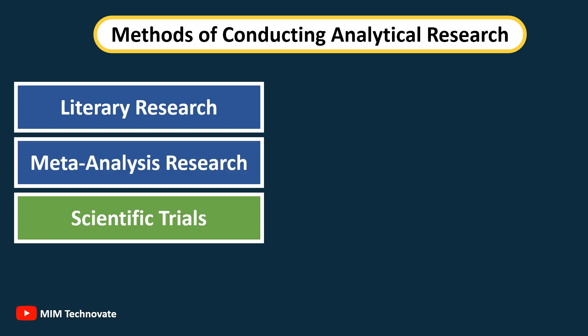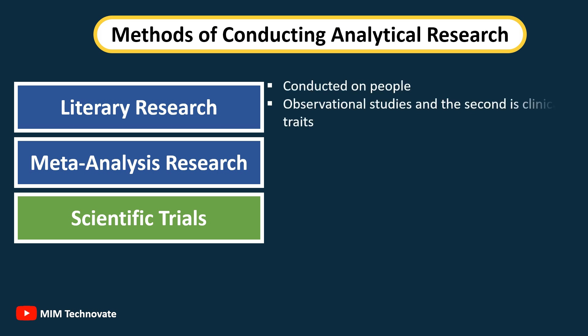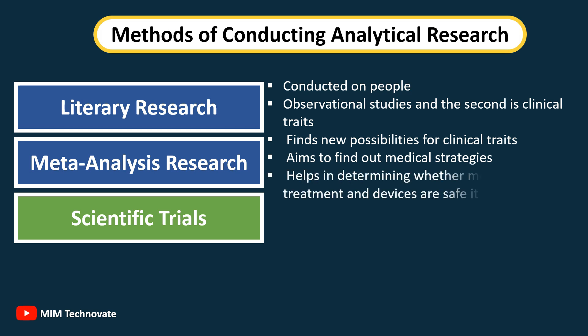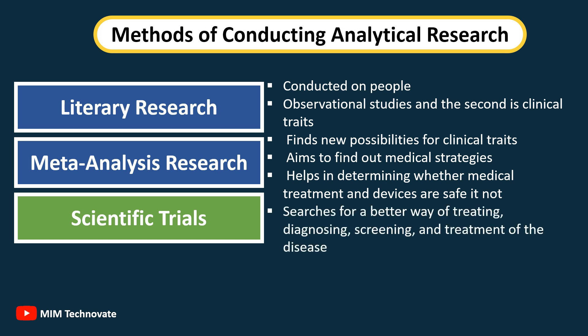Scientific trials research is conducted on people. It is of two types: observational studies and clinical trials. It finds new possibilities for clinical trials and aims to find out medical strategies. It also helps in determining whether medical treatments and devices are safe or not. It searches for a better way of treating, diagnosing, screening, and treatment of disease.